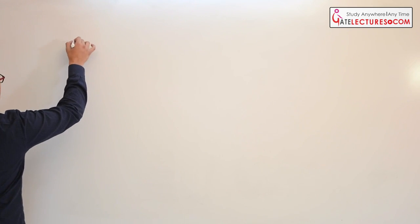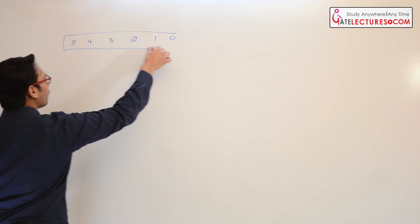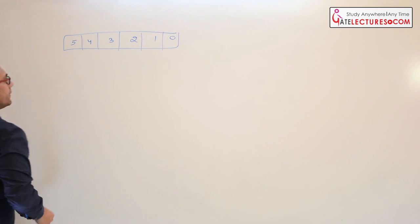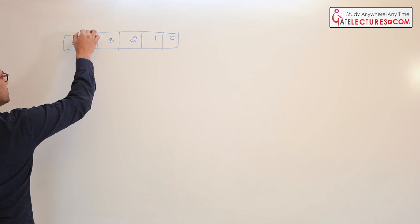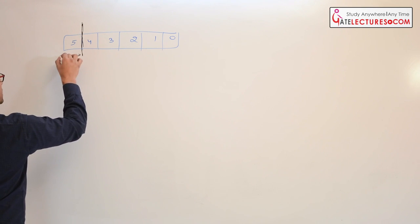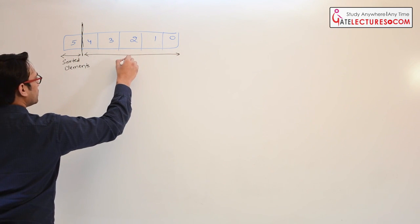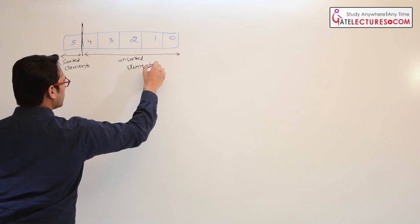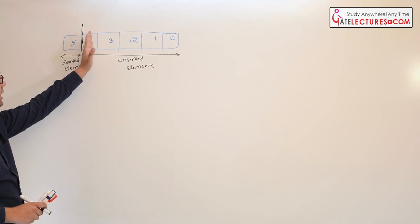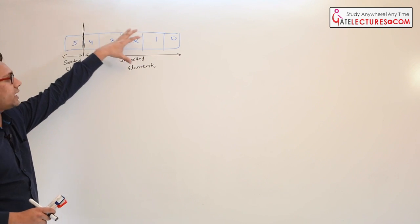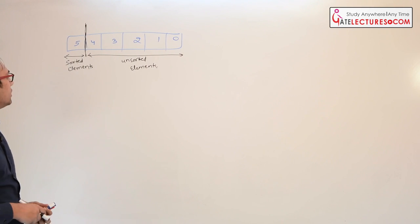Assume we have the elements 5, 4, 3, 2, 1, 0 in an array. We divide this array into two parts: one part is already sorted and the second part is not sorted. We have a window indicating which elements are sorted and which are not. We slide this window, taking one element from the unsorted data and placing it in its correct sorted position.